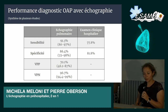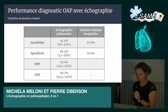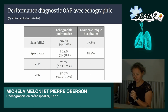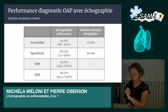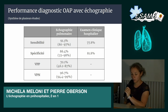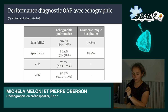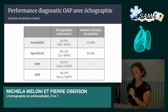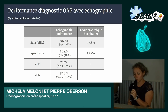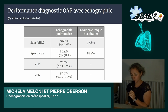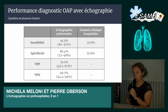Je vais comparer avec la performance de diagnostic de l'OAP avec une échographie. J'ai fait une synthèse de plusieurs études. On voit que la sensibilité est à 91,3%, avec une marge entre 80 et 97%. Comparé à l'examen clinique en hospitalier, on est à un peu moins que 78%. Pour ce qui est de la spécificité, on est à 86,4%, comparé à l'hospitalier à 80,8%. Il faut faire très attention avec ces chiffres parce qu'ils sont vraiment opérateur-dépendants, selon l'expérience d'utilisation de l'échographie.